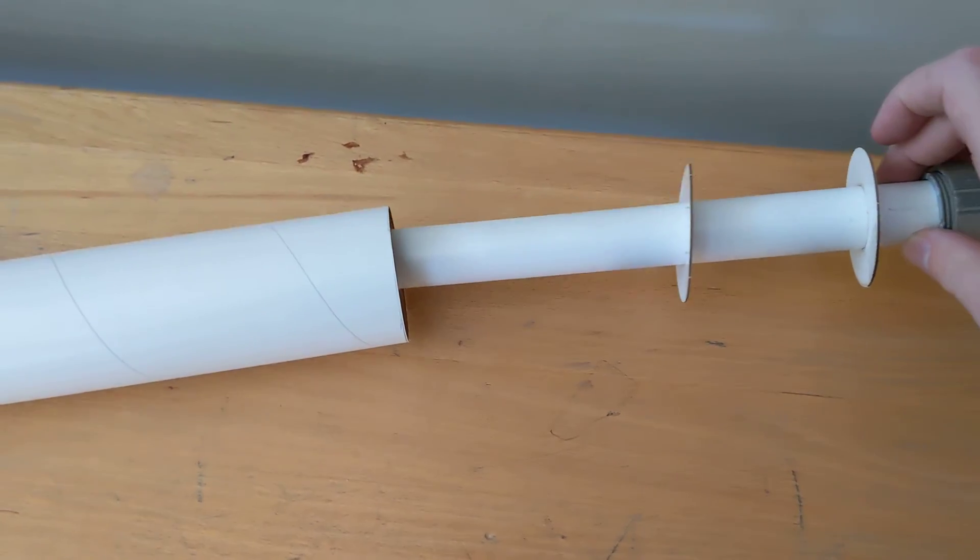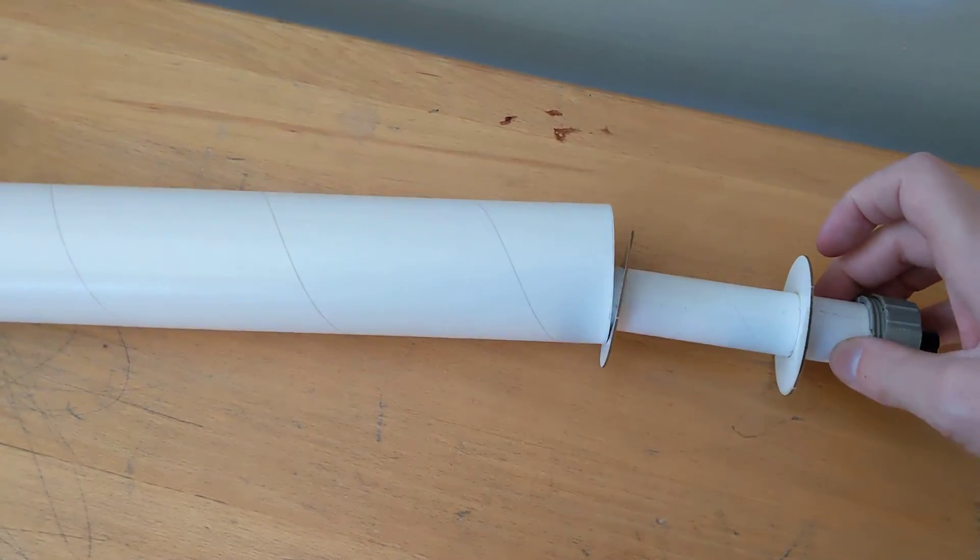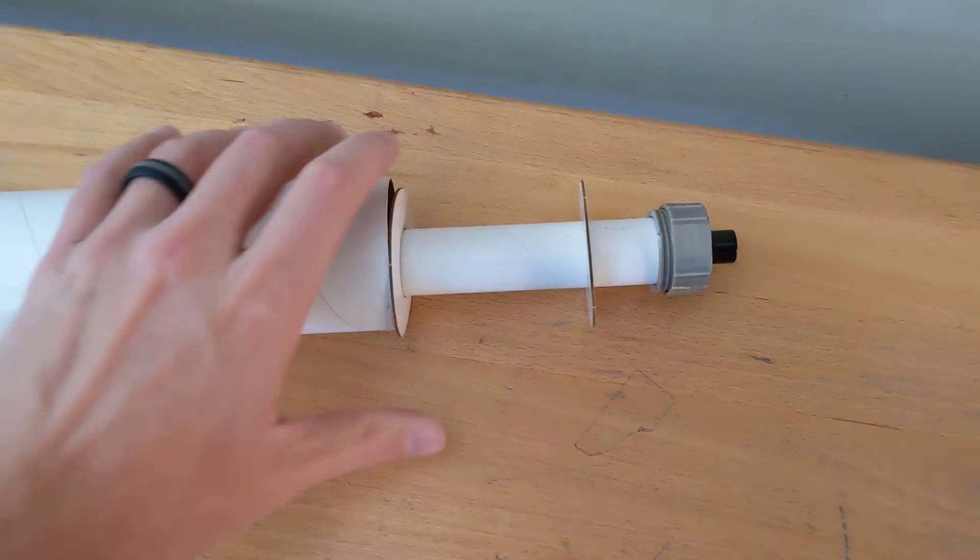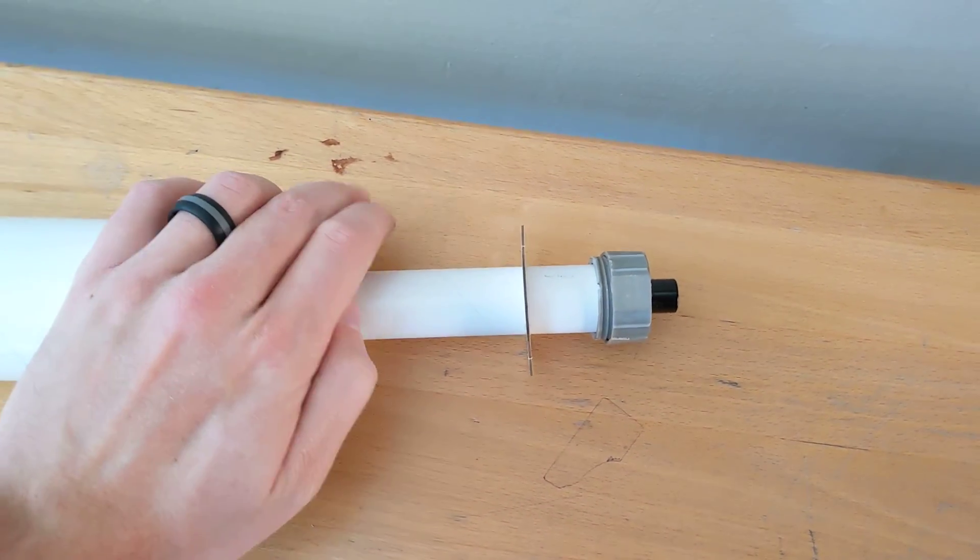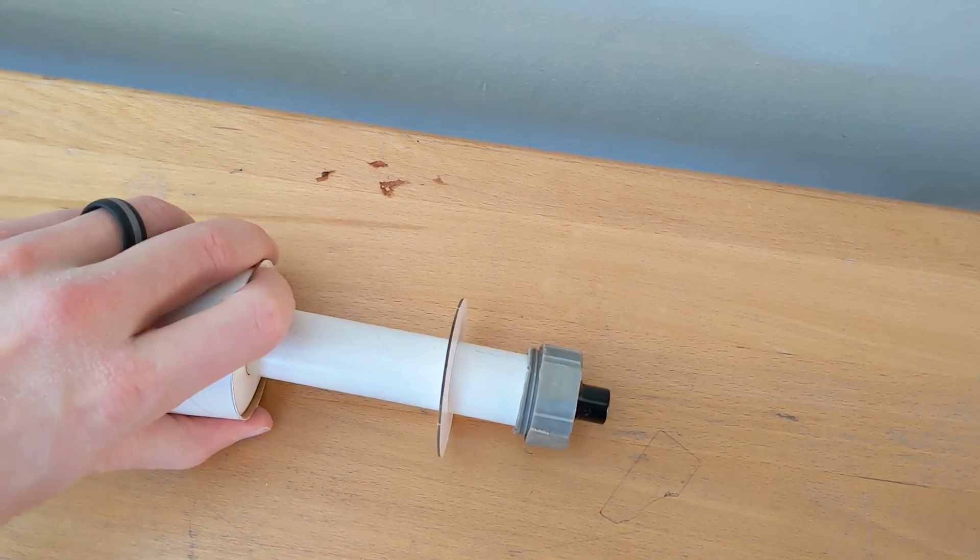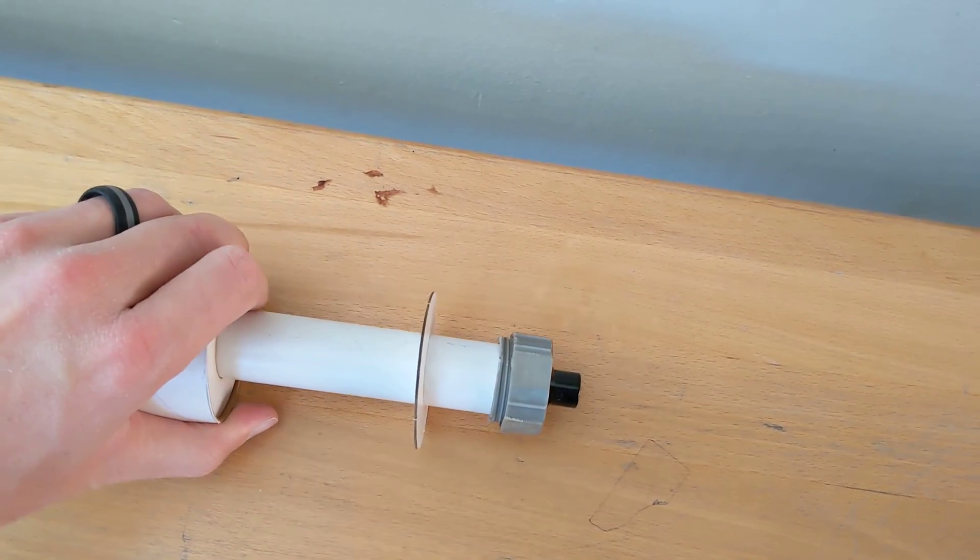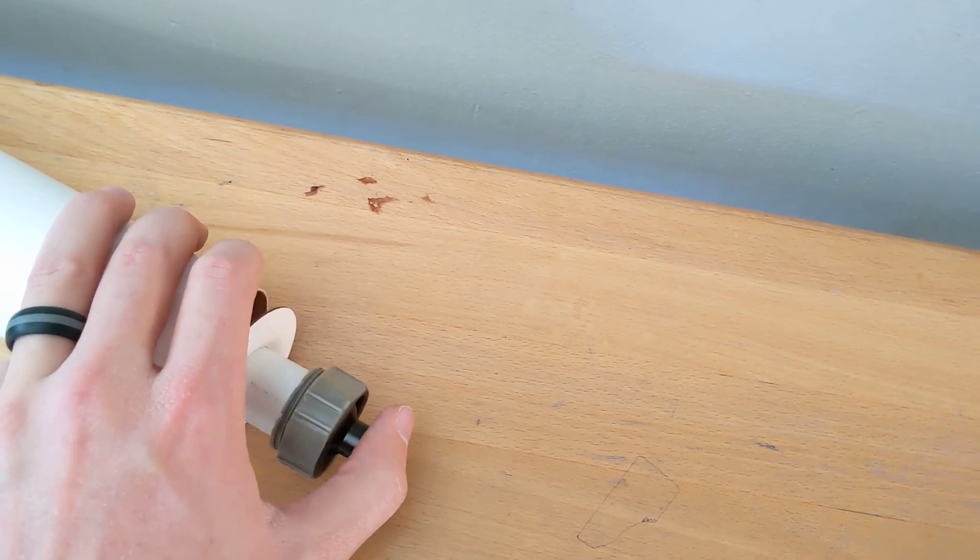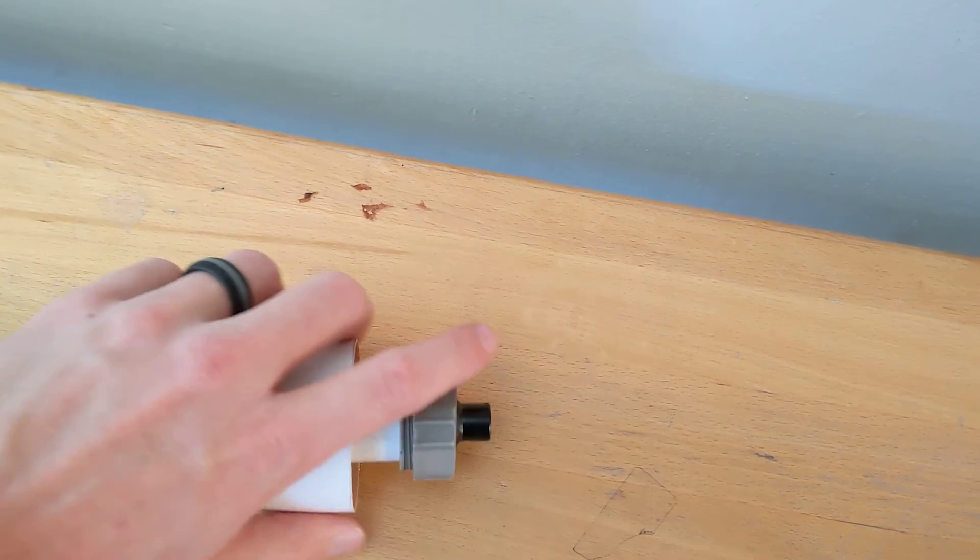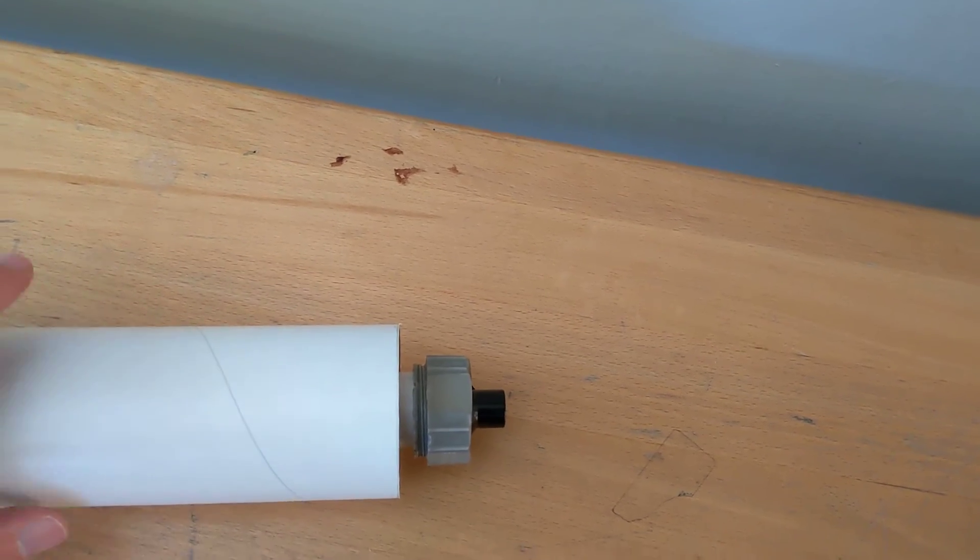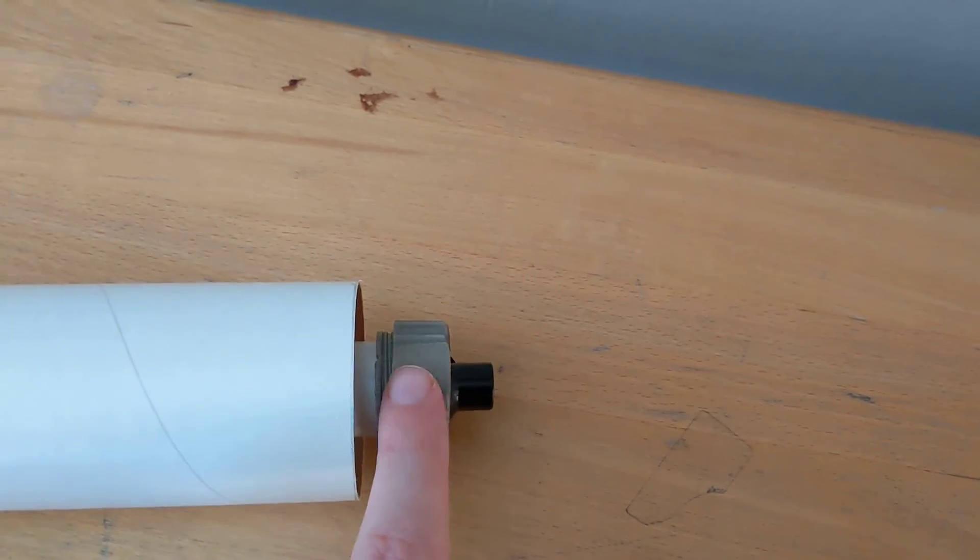Alright, place your motor tube, it should all be set up that way, and we'll just slide that in there. Maybe. If we can do it one handed, probably can't, let's be honest. So you want to have about that much of your motor tube sticking out, okay, just so you can access your motor retainer.